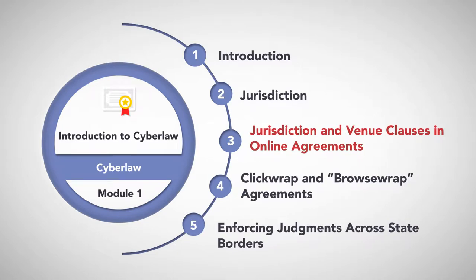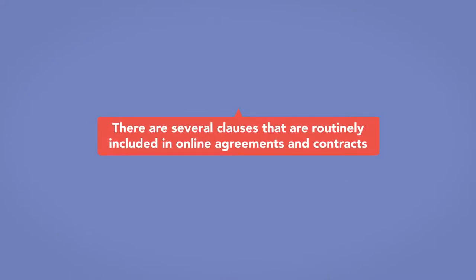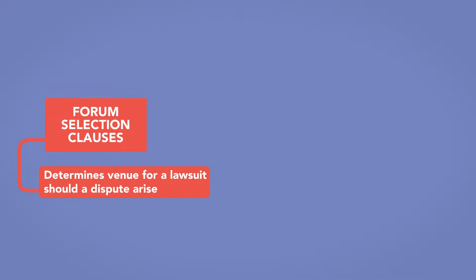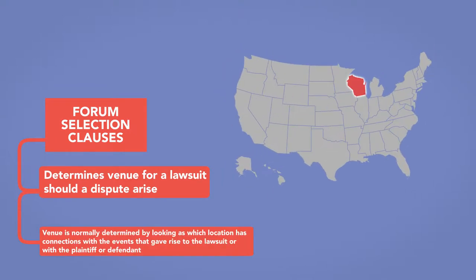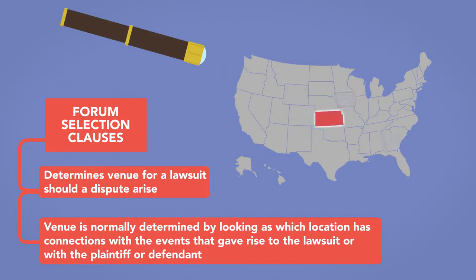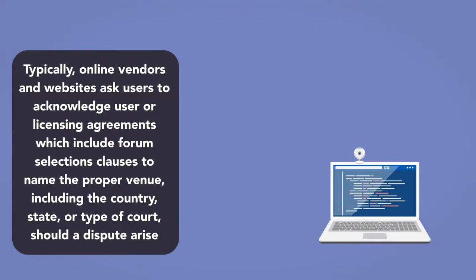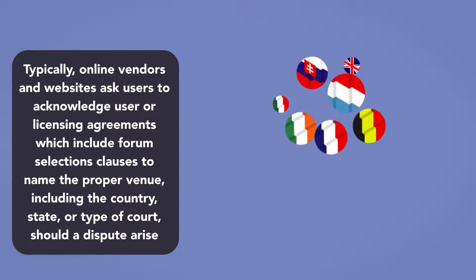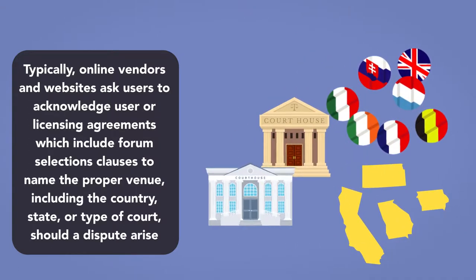Jurisdiction and venue clauses in online agreements. There are several clauses routinely included in online agreements and contracts, including forum selection clauses and choice of law clauses. A forum selection clause determines venue for a lawsuit should a dispute arise. Venue is normally determined by looking at which location has connections with the events that gave rise to the lawsuit, or with the plaintiff or defendant. Typically, online vendors and websites ask users to acknowledge user or licensing agreements which include forum selection clauses naming the proper venue, including the country, state, or type of court should a dispute arise.